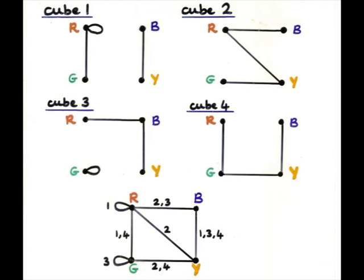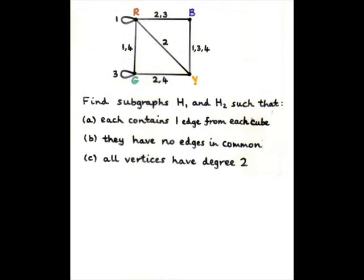Now, I can combine all this together into a single graph because rather than having four graphs, it's much easier to have one picture. And what I want to do now is I want to find two graphs inside here, parts of this, where each contains one edge from each cube because each side of the stack has got one face from each cube. They have no edges in common because you don't want the faces that appear on the front and back also to appear on the left and right.